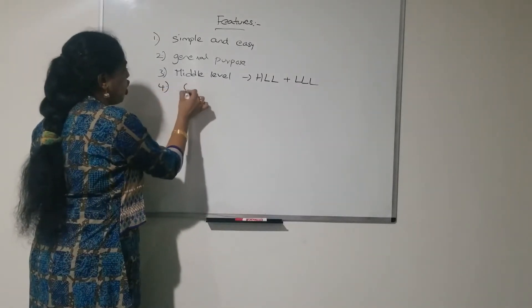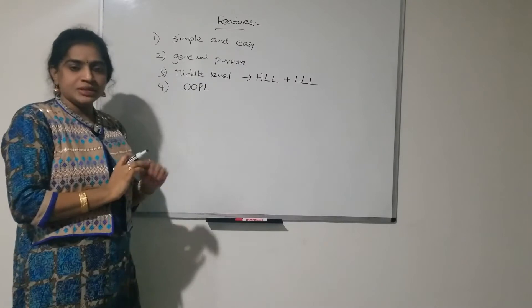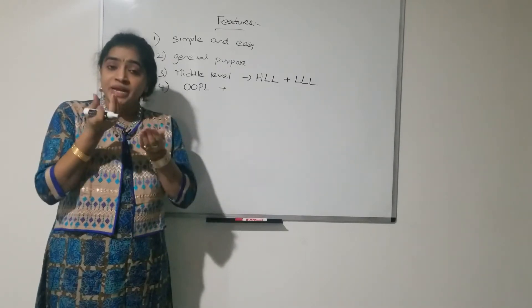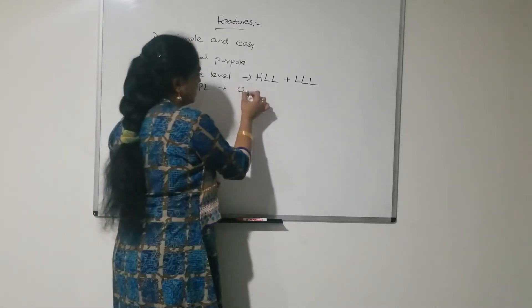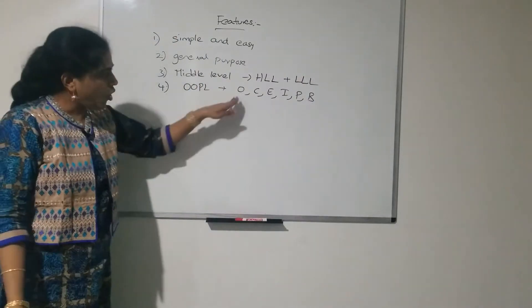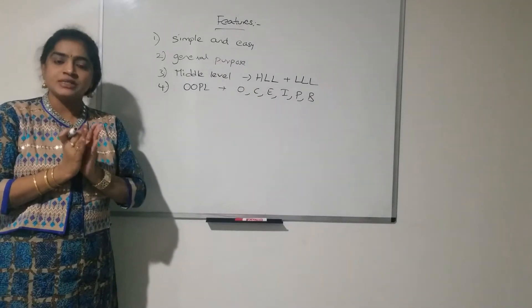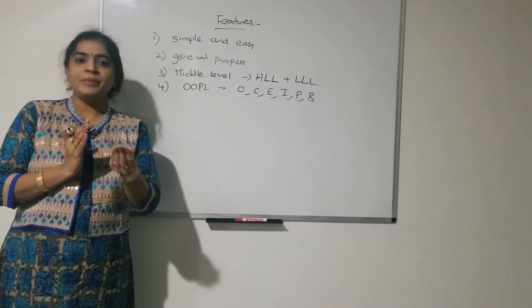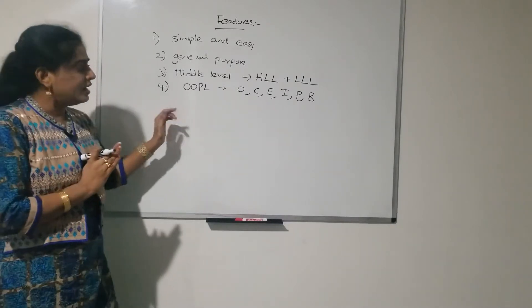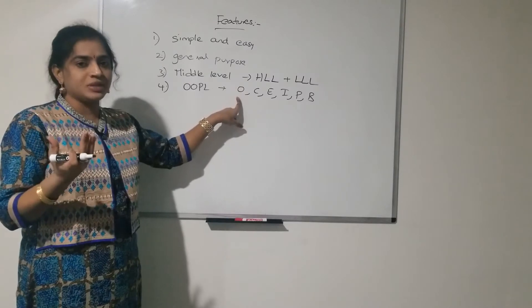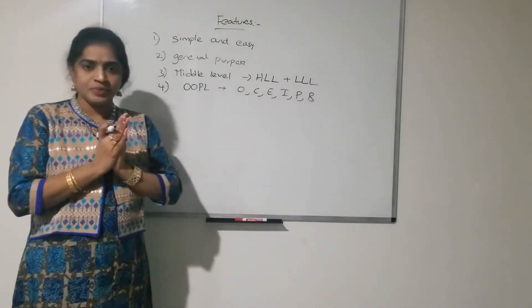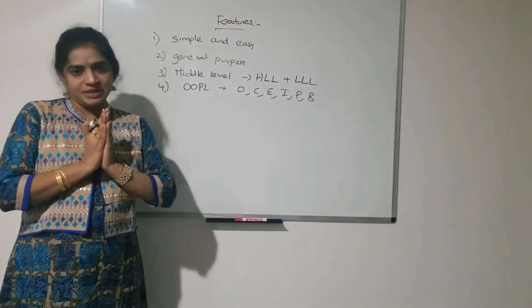C++ is an object oriented programming language. It contains many powerful concepts like objects, classes, encapsulation, inheritance, polymorphism, and data binding. All these OOPS concepts we will learn in C++. Whatever programming language depends upon objects is called an object oriented programming language.